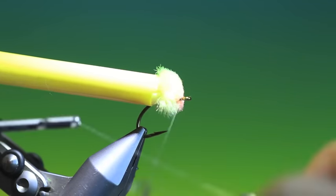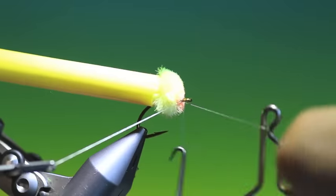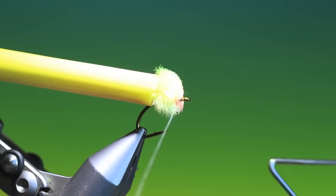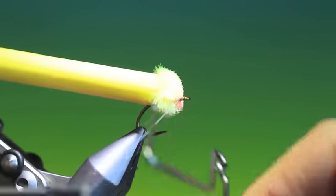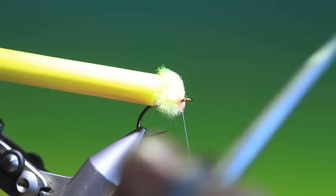Then we can take our whip finish tool. And we make a couple of whip finishes nice and tight at the front. Remove our tying thread.